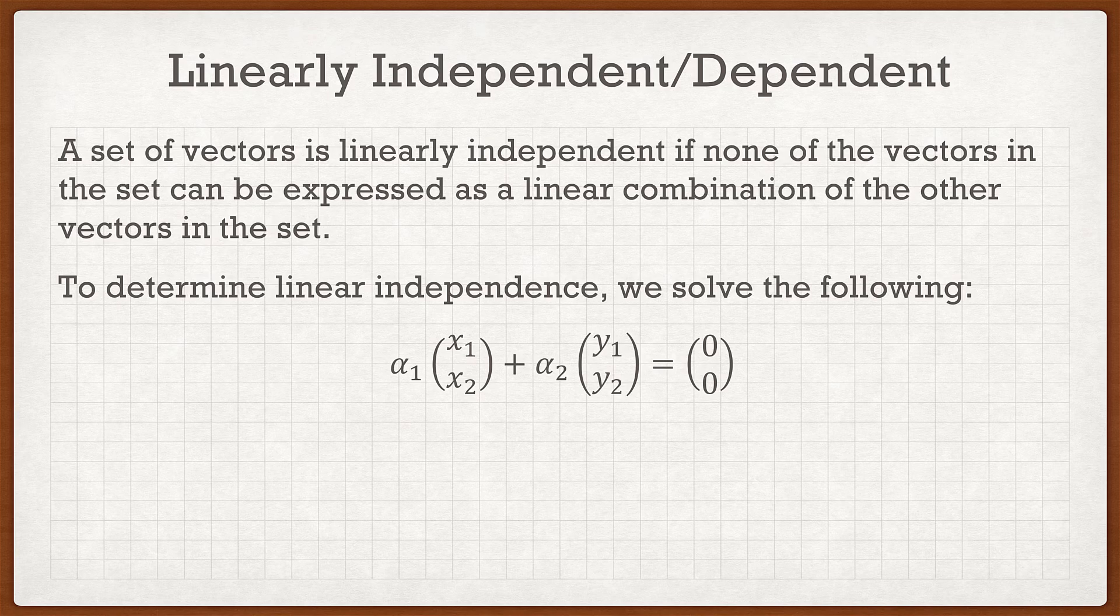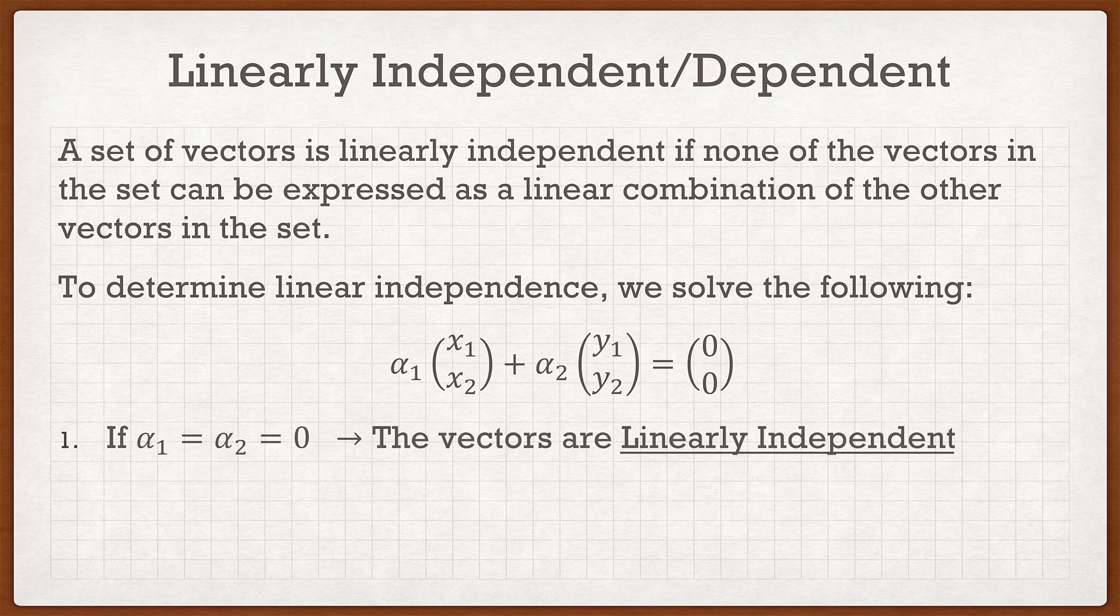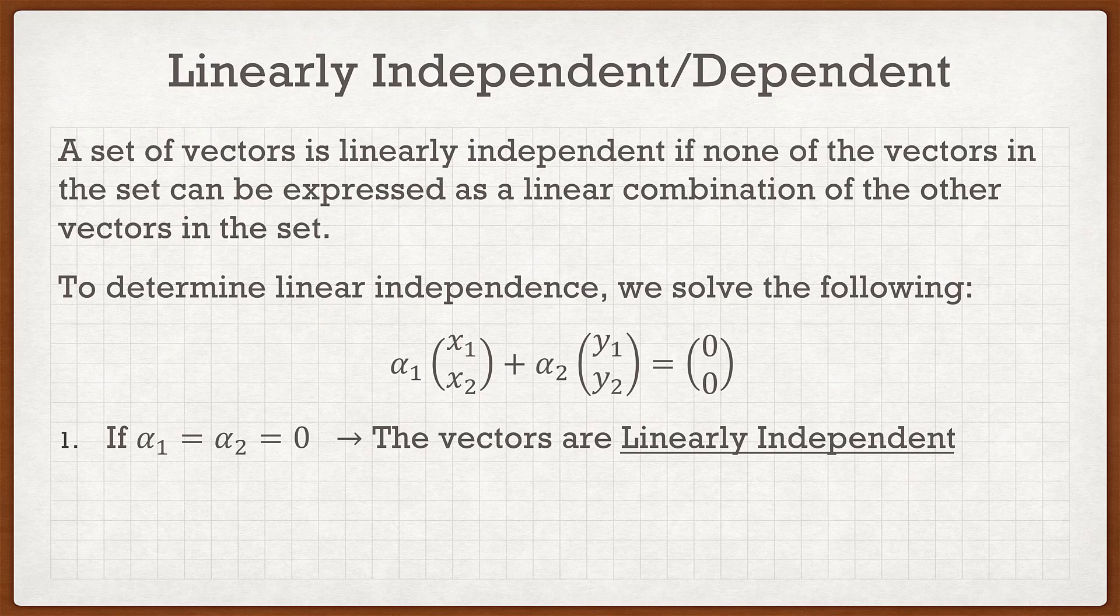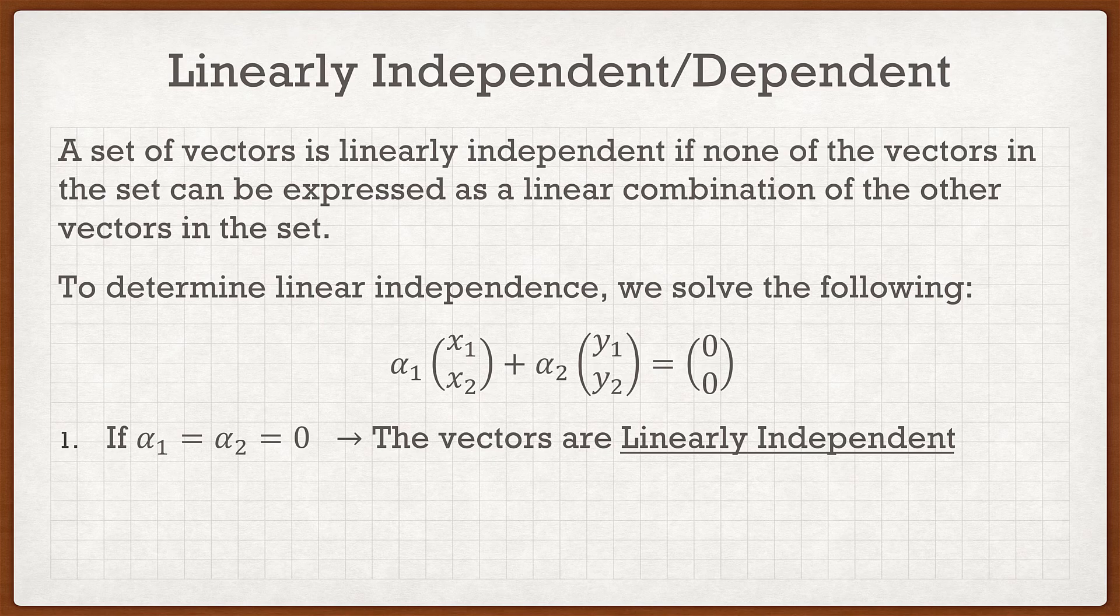There's going to be two situations that happen. The first one is that alpha 1 equals alpha 2, and they're both 0. That's very important, they're both 0, not one of them is 0. And if this is the case, the vectors are linearly independent. So for part A, solve alpha 1 and alpha 2, and what you should find, since you already know they're linearly independent, is that alpha 1 equals alpha 2, and they're both equal to 0.